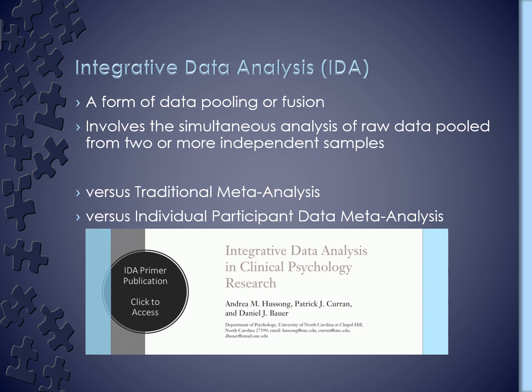Integrative data analysis is a form of data pooling or fusion. When we started this about 20 years ago, the conversation was about the accumulating amount of high quality data that was being generated and archived and what we were going to do to leverage that data. During this time, there have been all kinds of techniques in this area of data pooling and fusion, and so IDA is really part of a larger toolbox. What IDA is, is a way of pooling data that involves a simultaneous analysis of raw data from two or more independent samples. This is different than traditional meta-analysis, which really focuses on pooling summary statistics that you get from analysis of the individual samples — answering a question such as what is the effect size of a particular treatment when pulling across different samples.